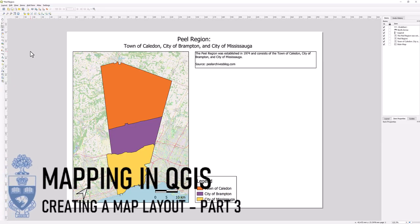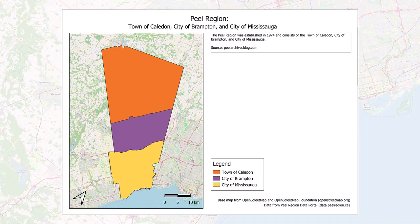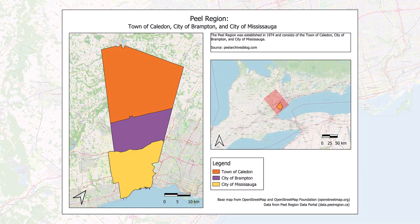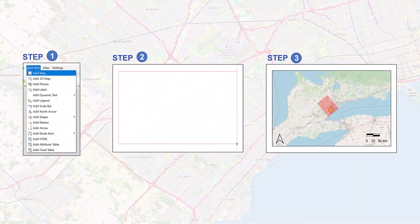In this Part 3 video, we will explore adding and working with a second map in our map layout. A second data frame or an inset map can provide your map reader with added contextual information. A second map can be added to your layout in the same way in which you would add a map to your layout.